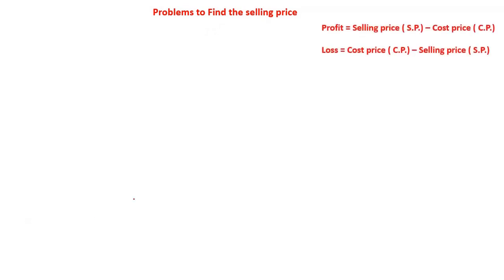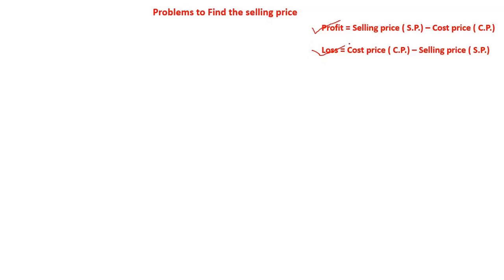As you can see in the previous video we discussed about two formulas. One is: profit is equals to selling price minus cost price. Another one is: loss is equals to cost price minus selling price. Using these two formulas we are going to find the selling price.